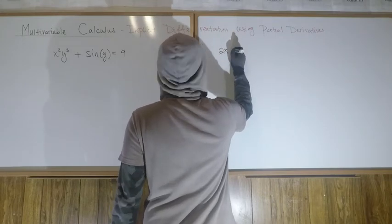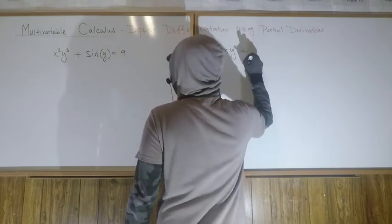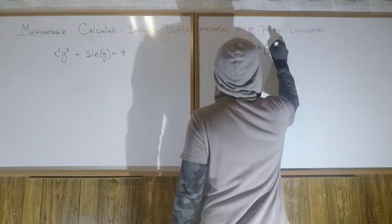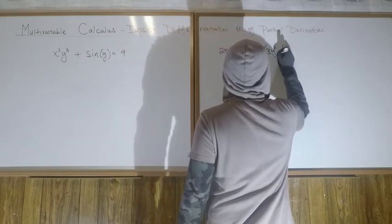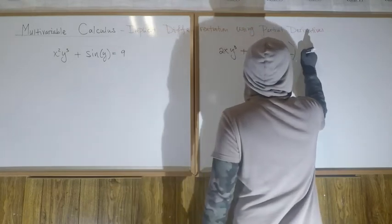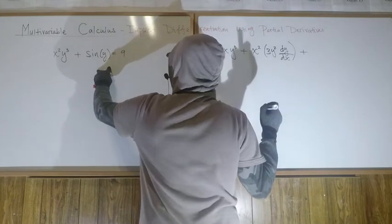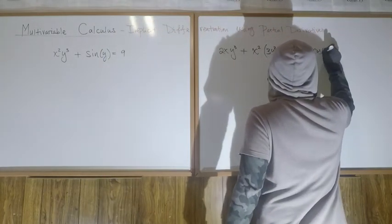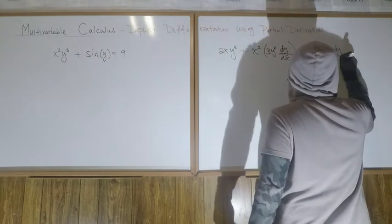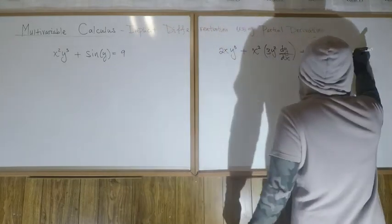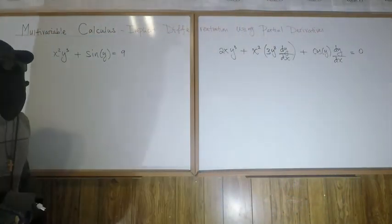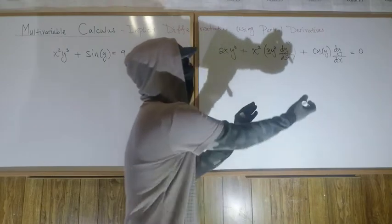We're going to say 2x times y³ plus x² and then times the derivative of y³ which is 3y², and of course we know to multiply by dy/dx here. Plus the derivative of sine y is going to be cosine y, but then by chain rule we have to multiply by the derivative of y which is 1, but then dy/dx. And of course we take the derivative on both sides so we go equals the derivative of 9 is 0.